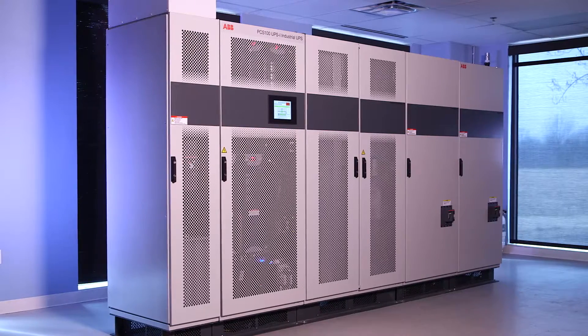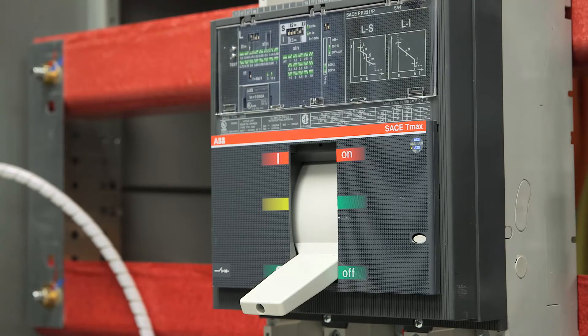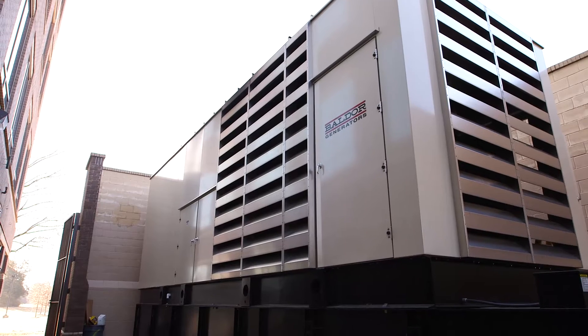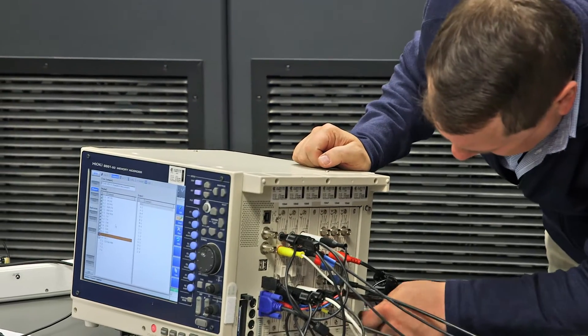ABB provided a leading-edge solution consisting of a PCS100 industrial UPS, breakers, a diesel generator, and surge suppressors to ensure the data center and additional critical areas were not put at risk of complete power failure.